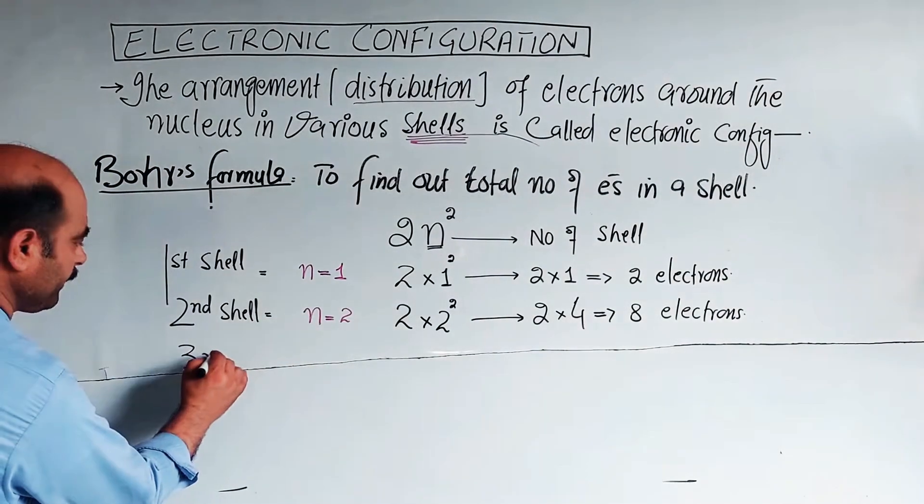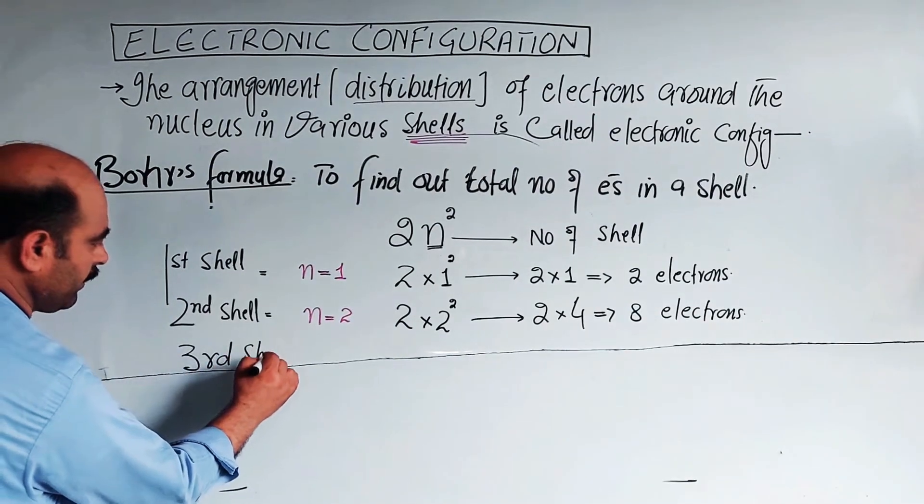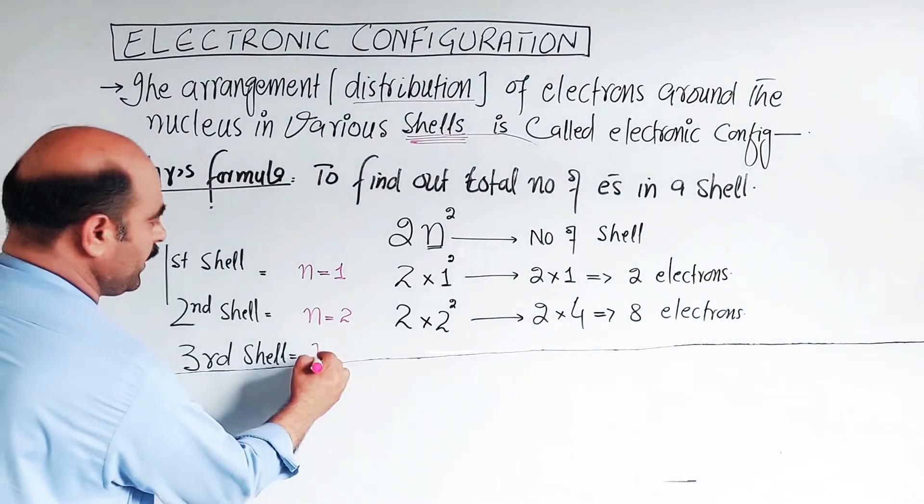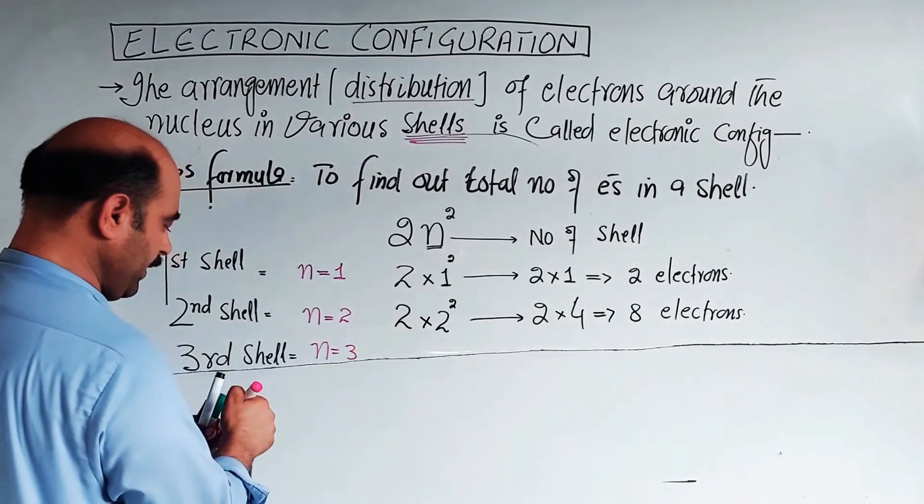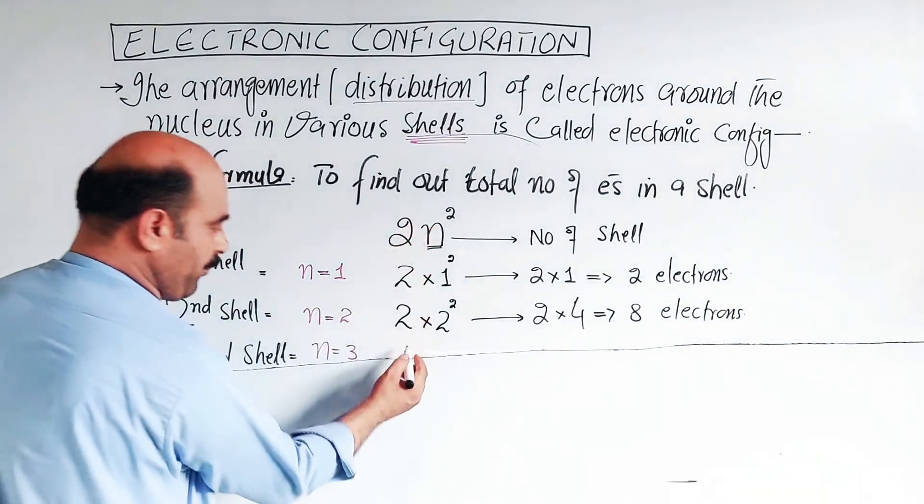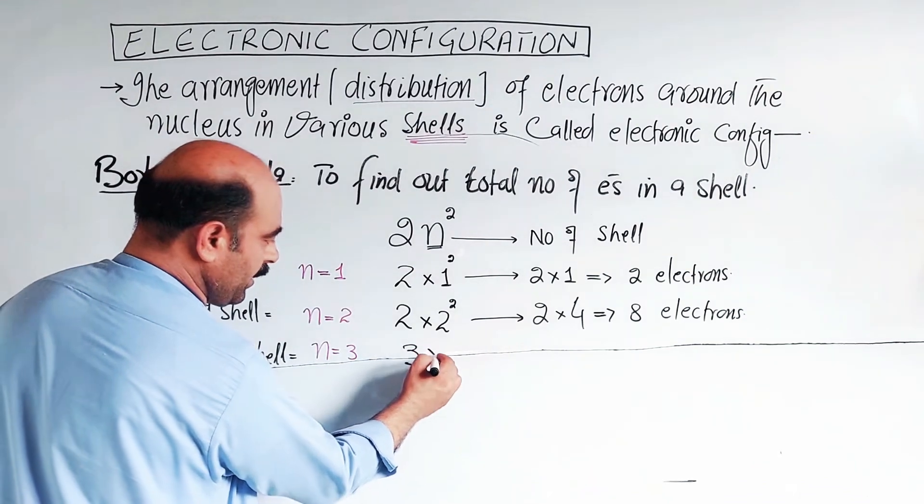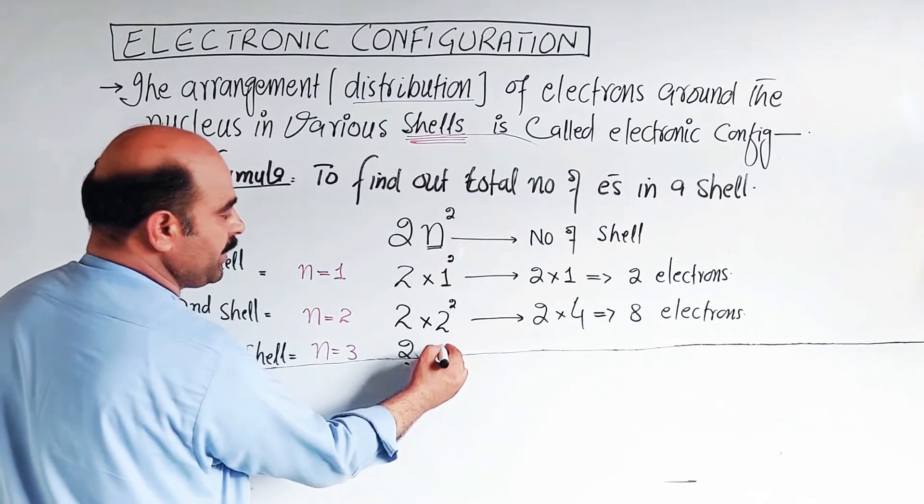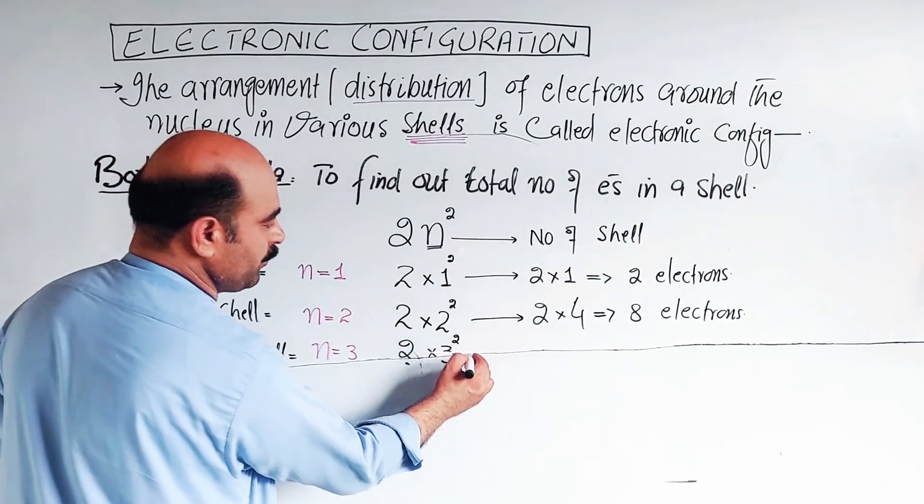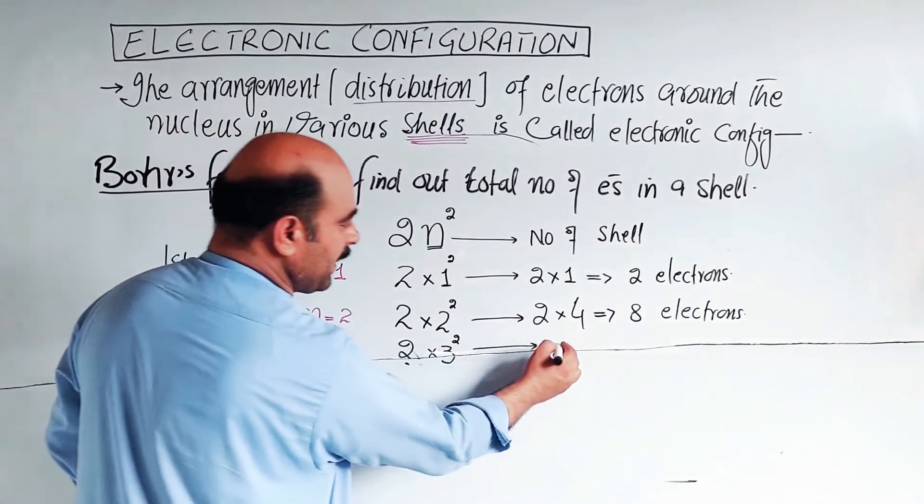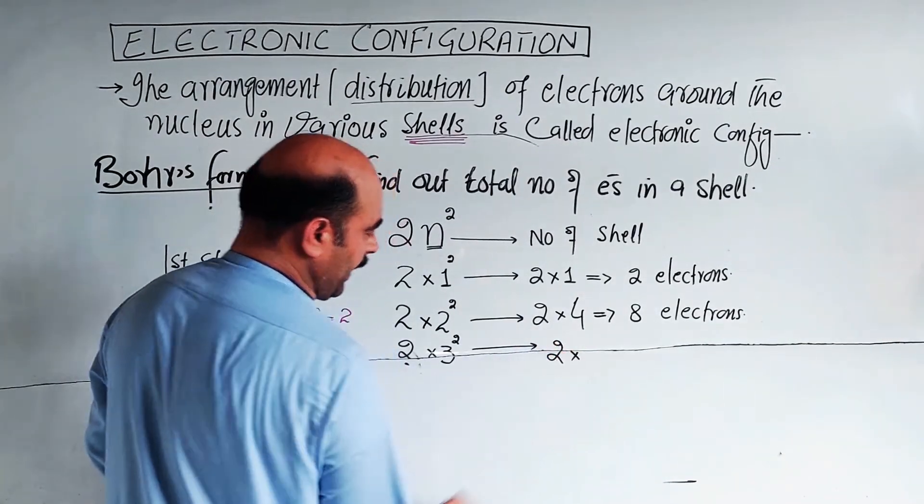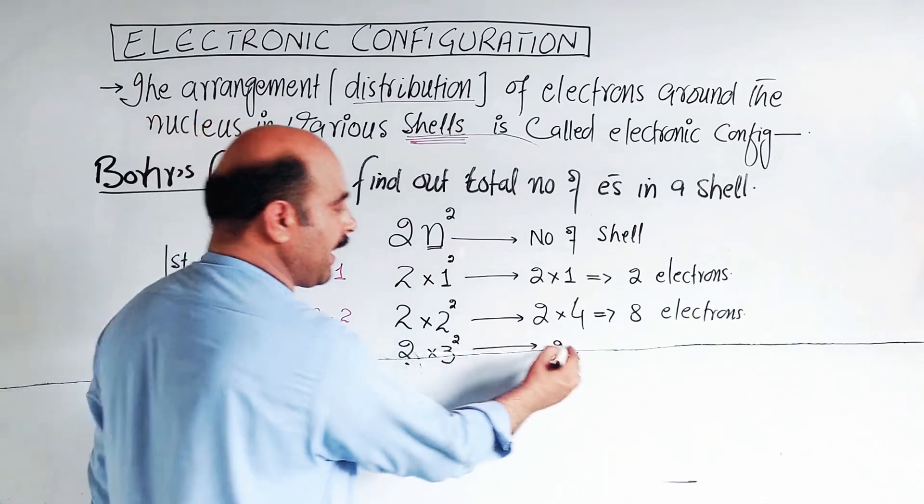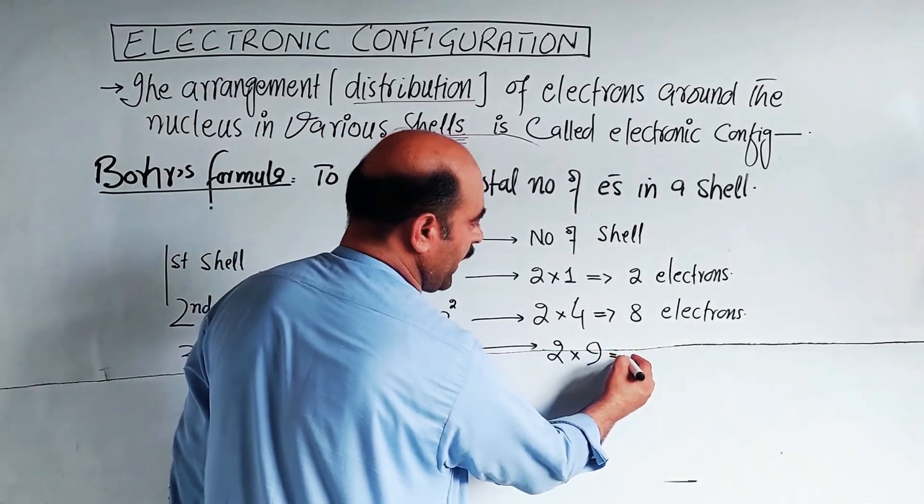Third shell: n is equal to 3. So 2 multiplied by 3 squared. Three times 3 is 9, and 9 times 2 is 18. So the third shell can have 18 electrons.